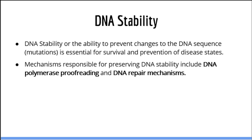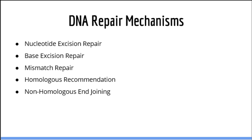DNA stability — the ability to prevent alterations in the DNA sequence — is essential for survival. For this reason, numerous mechanisms exist to maintain DNA stability. These mechanisms fall into two broad categories: DNA proofreading, typically performed by DNA polymerase, and DNA repair mechanisms. We talked about DNA polymerase in our previous video titled DNA replication. Today we will talk about DNA repair mechanisms.